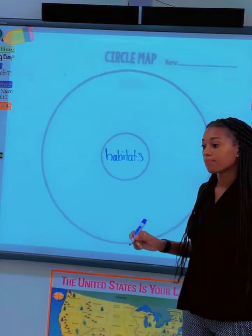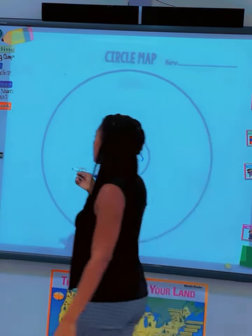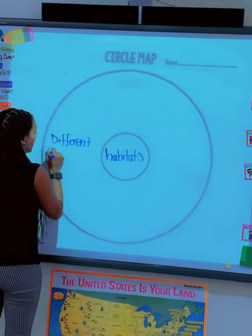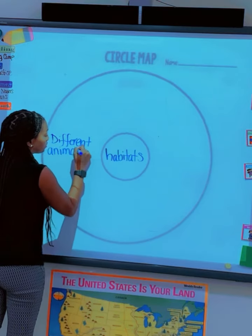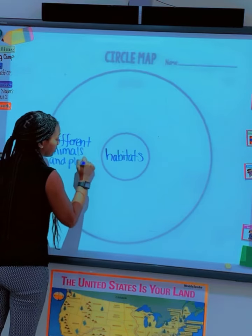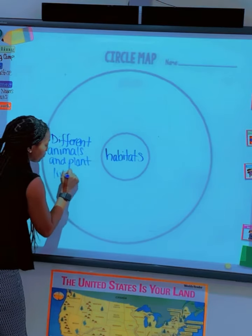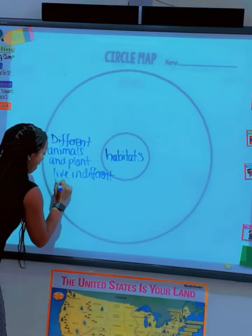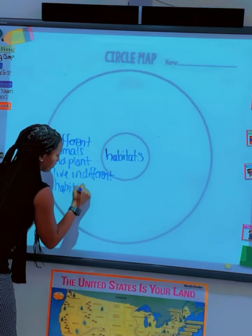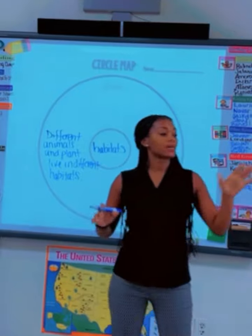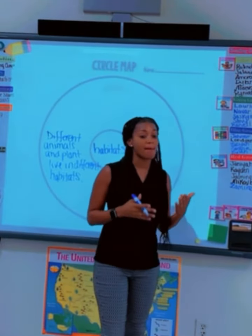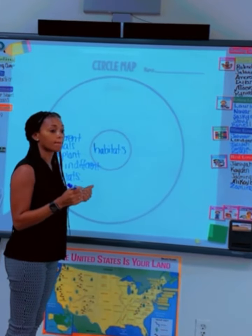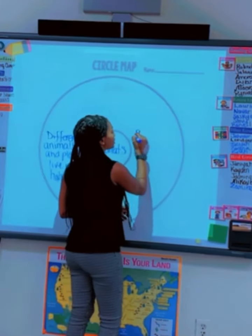Different animals and plants live in different habitats. Very good. Different animals and plants live in different habitats. Give me something else that we learned about habitats. Yes? Some habitats are cold. Some habitats are cold.